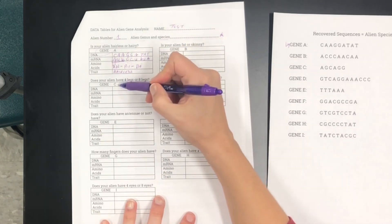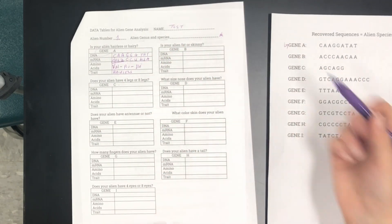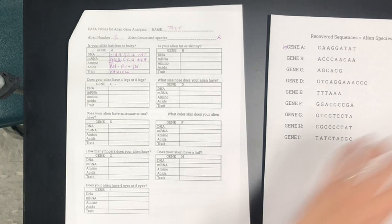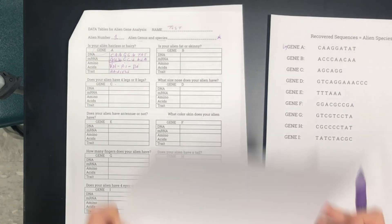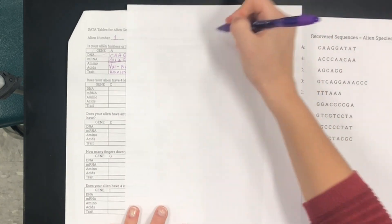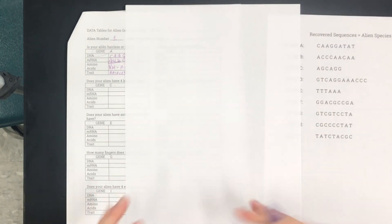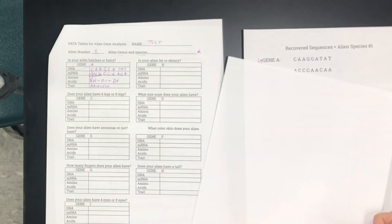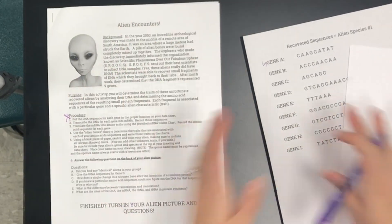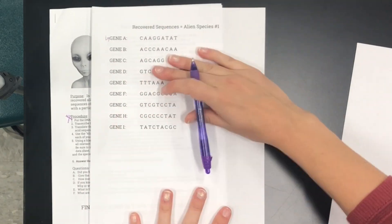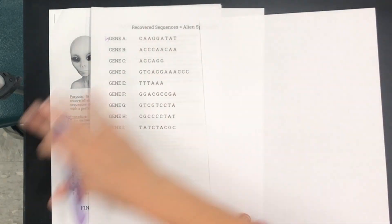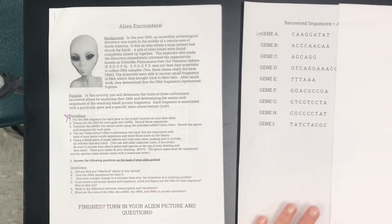Now you're going to do this again for your other genes all the way through until you figure out what your alien looks like and then in the last step you're going to take all of the traits that you learned about your alien and you're going to draw your alien in a beautiful depiction on your own piece of paper. So you're going to have to make sure that when you start you have your alien encounter sheet, your alien recovered sequences, and then one piece of blank paper and all these materials will be available for you in class.